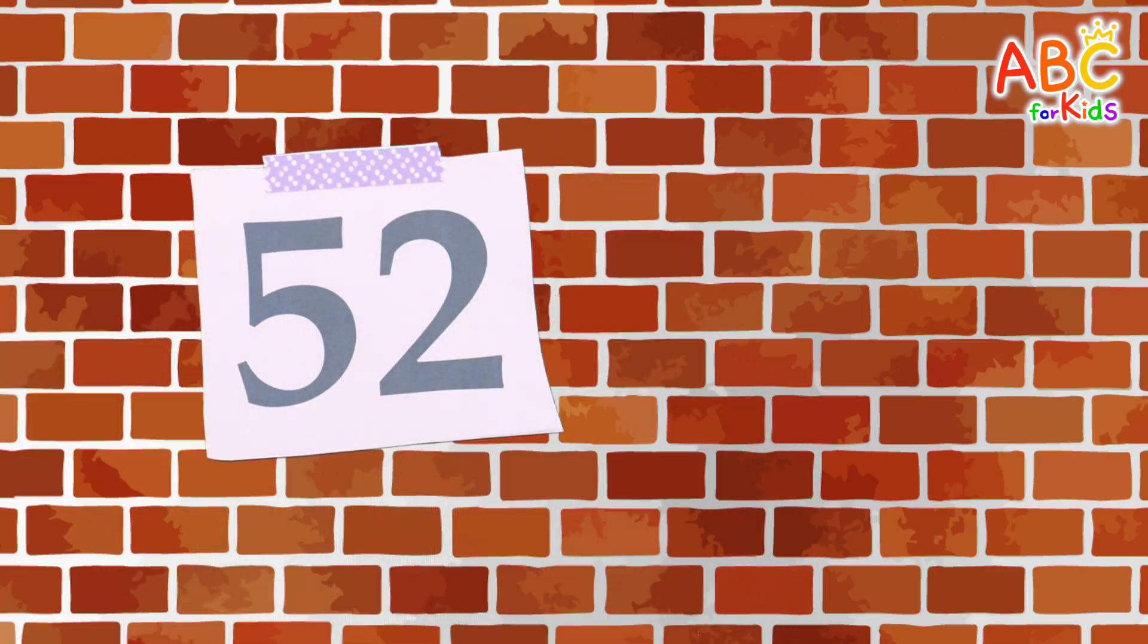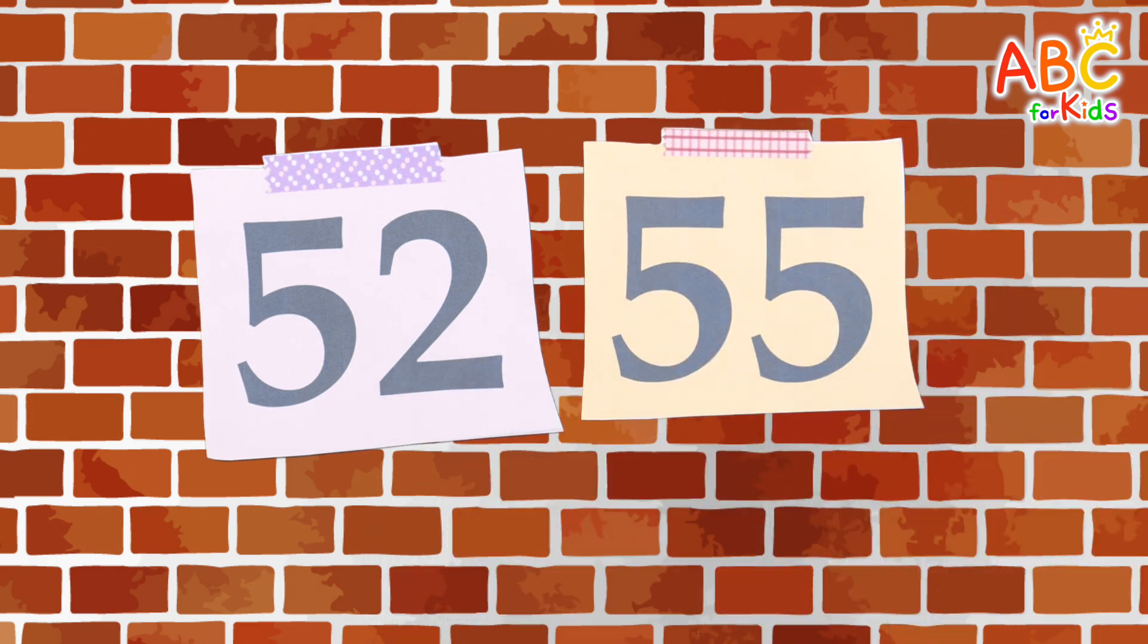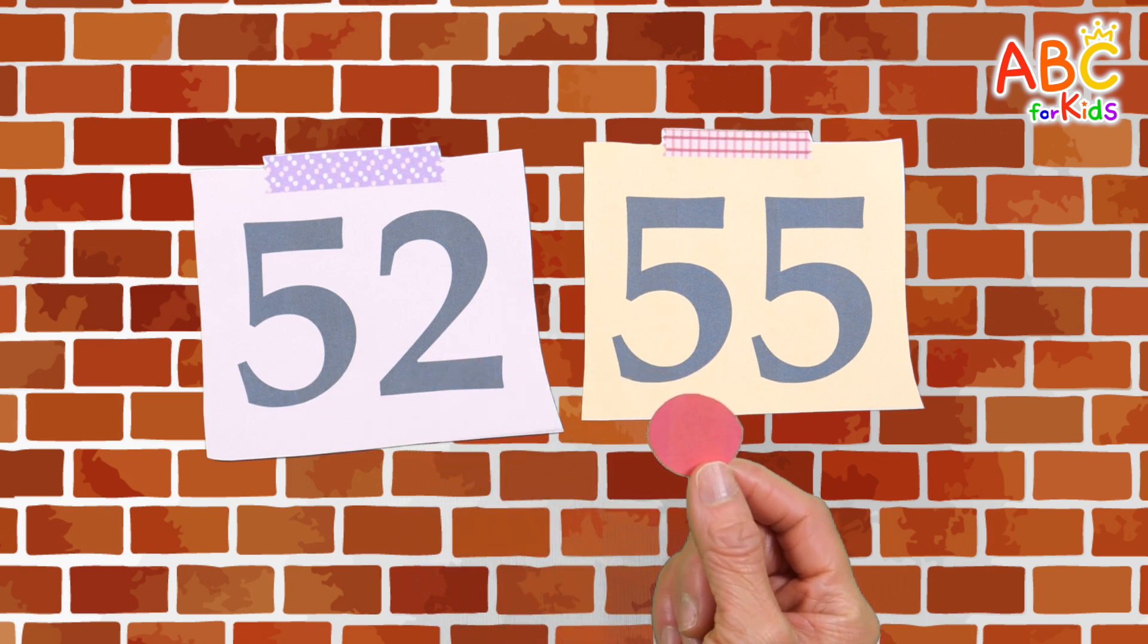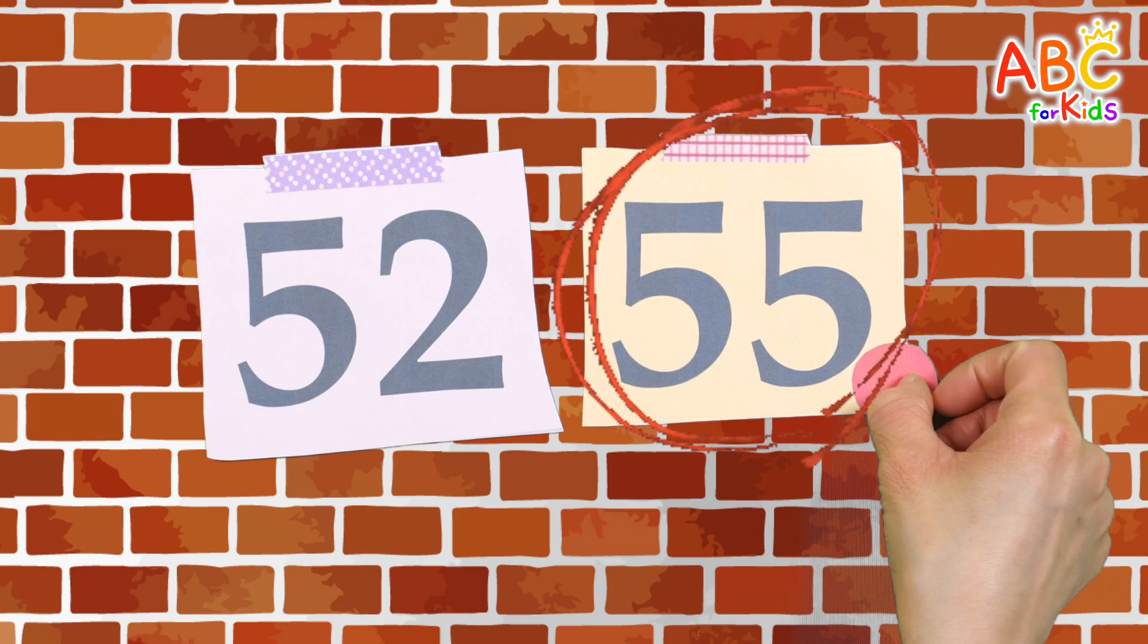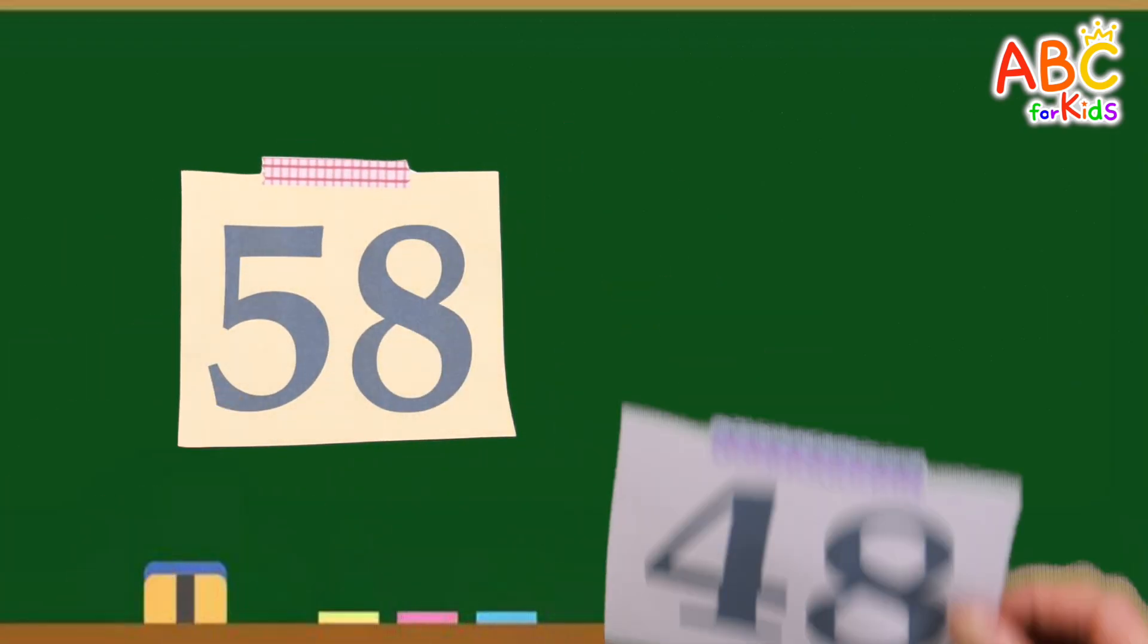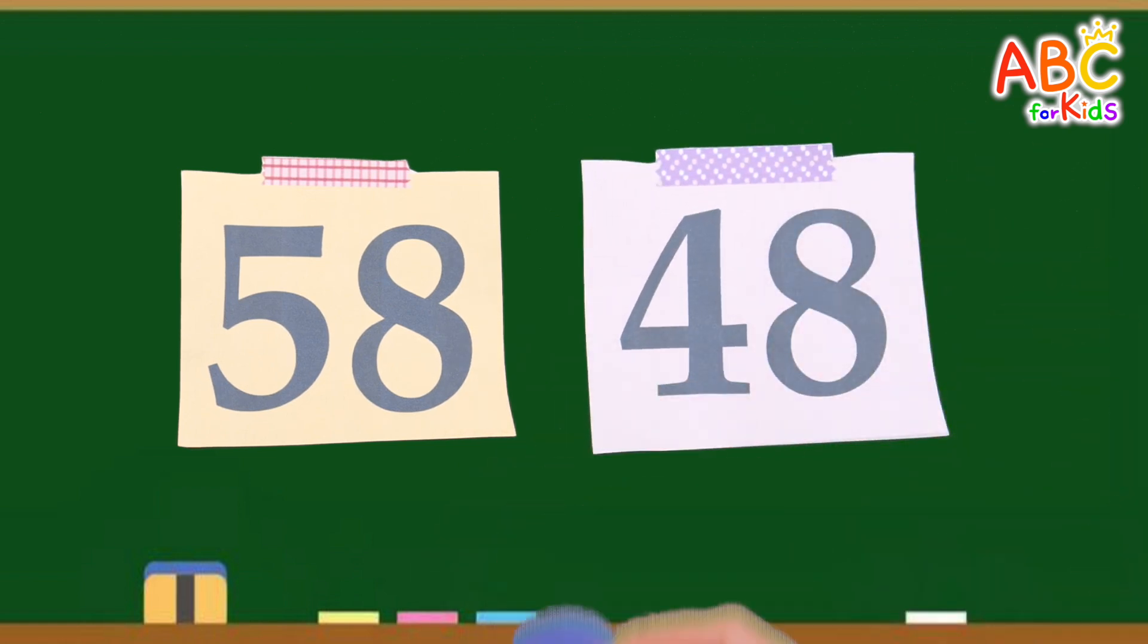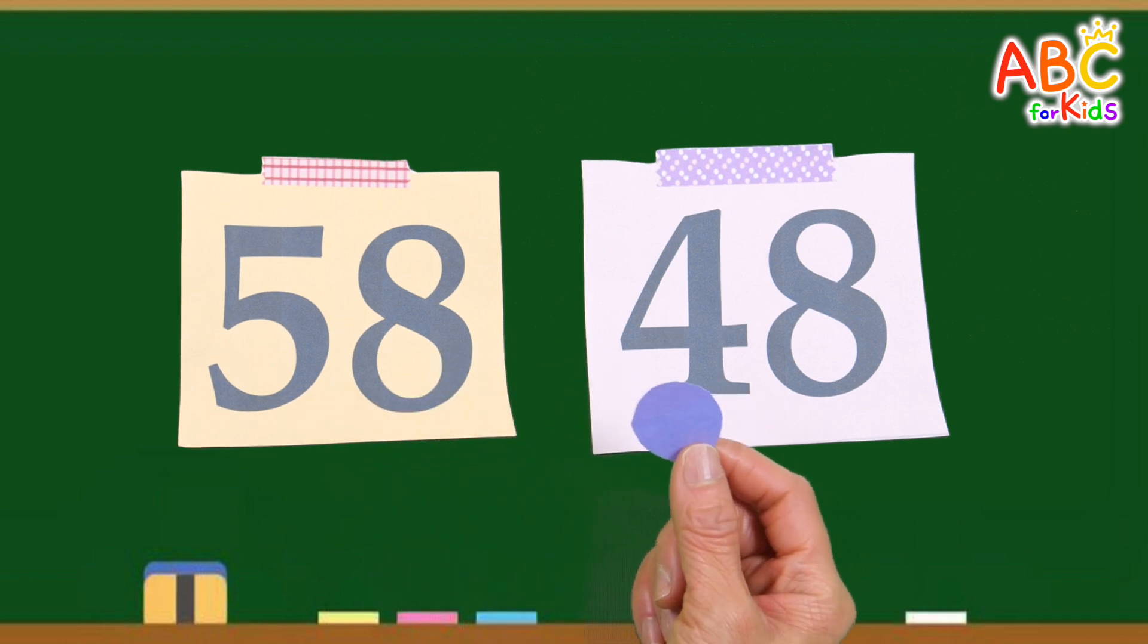Fifty-eight, fifty-five. There are two numbers! Let's find a bigger number and put a red sticker on it! That's right! Fifty-eight. Forty-eight. Let's find a bigger number and put a purple sticker on it! That's right!